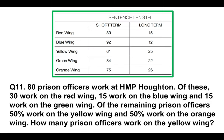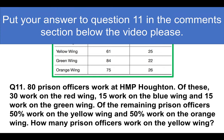Question eleven — I want you to work this out. 80 prison officers work at HMP Houghton. Of these, 30 work on the red wing, 15 work on the blue wing, and 15 work on the green wing. Of the remaining prison officers, 50% work on the yellow wing and 50% work on the orange wing. How many prison officers work on the yellow wing? Put your answer to question 11 in the comments section and I will mark it for you.